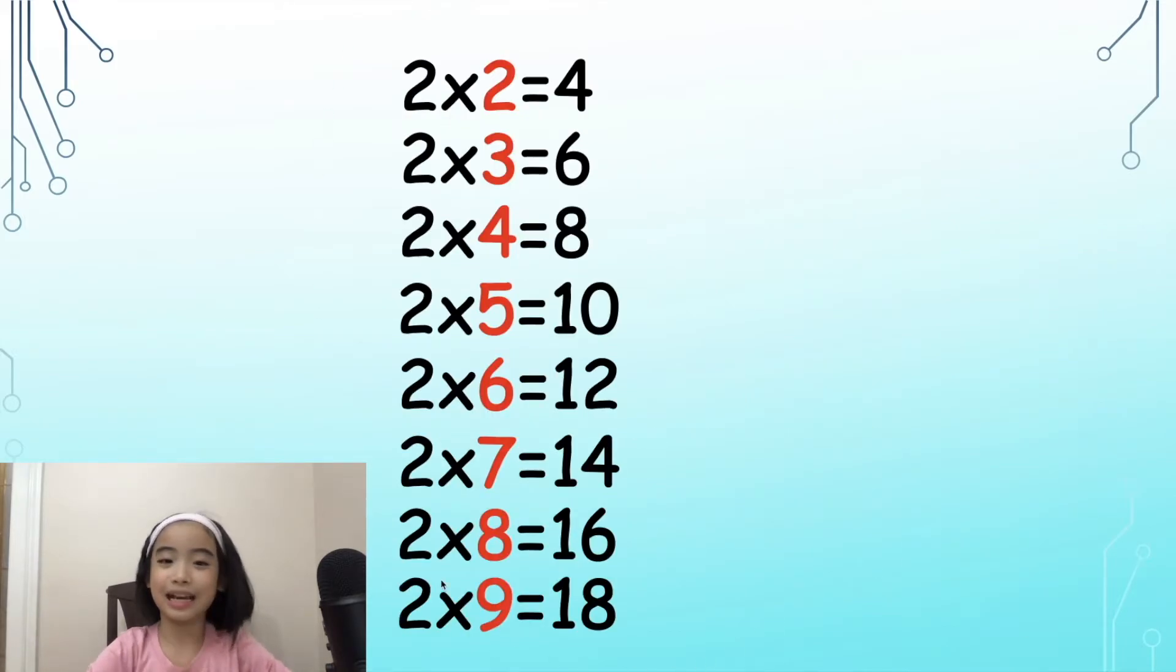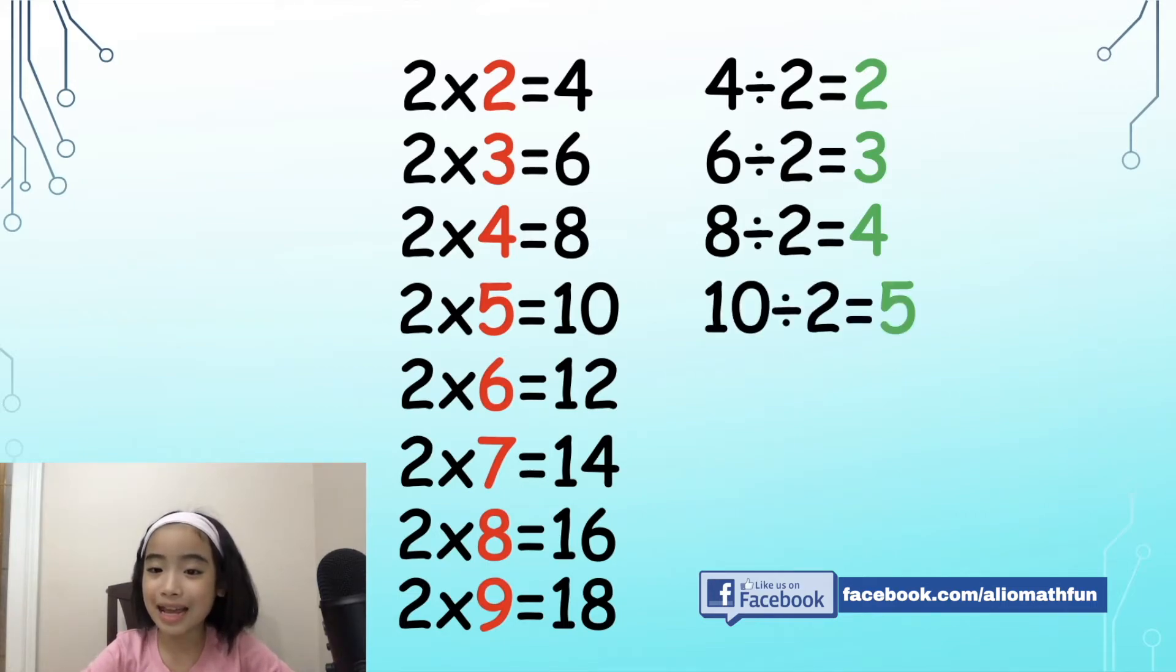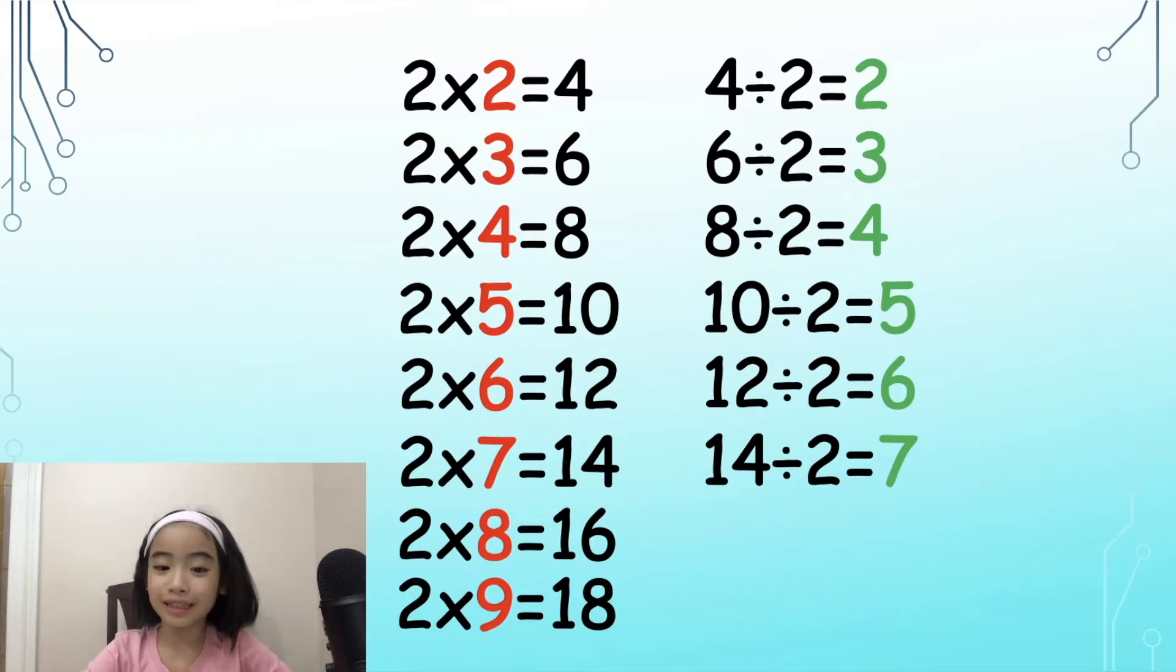Here is the 2 times table. Now, let's say the answers of division together. 4 divided by 2 equals 2. 6 divided by 2 equals 3. 8 divided by 2 equals 4. 10 divided by 2 equals 5. 12 divided by 2 equals 6. 14 divided by 2 equals 7.